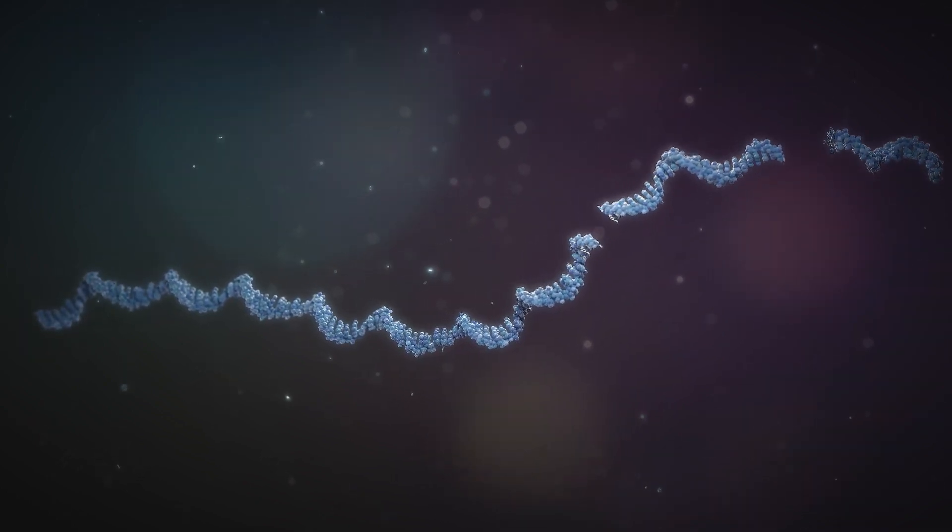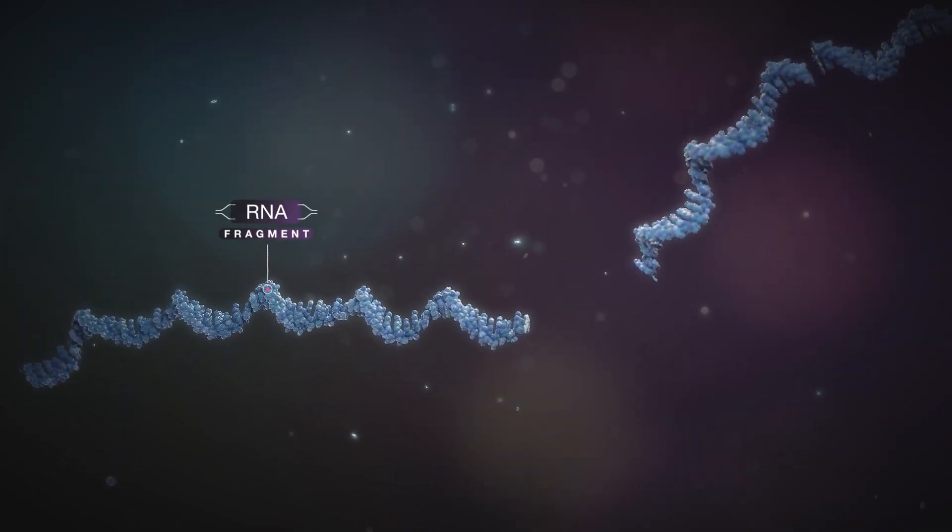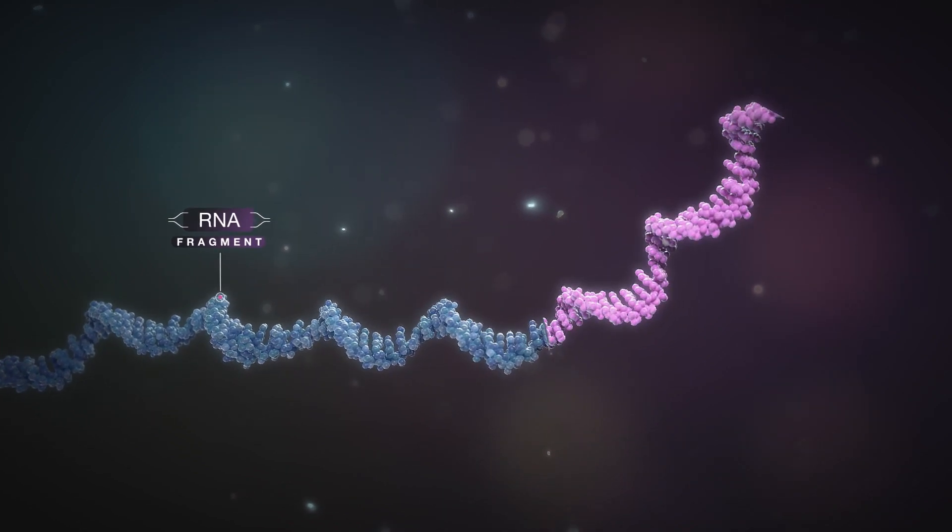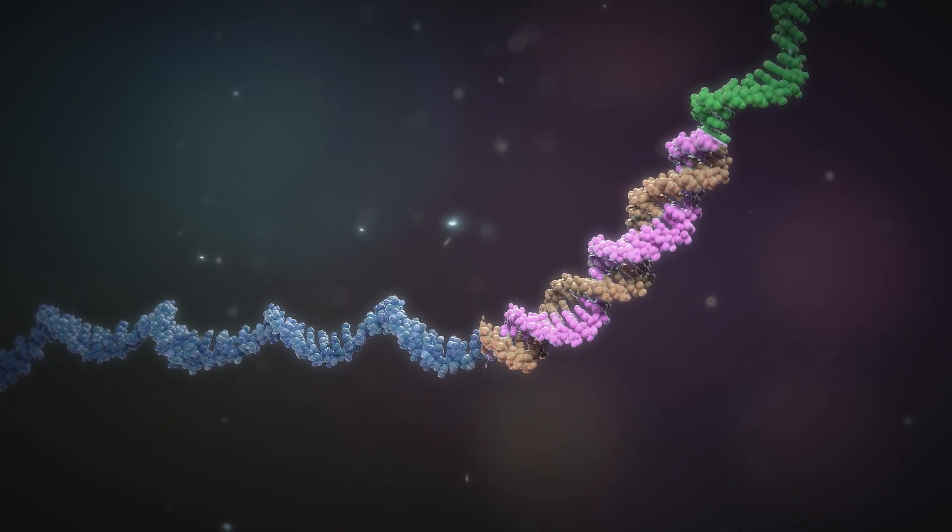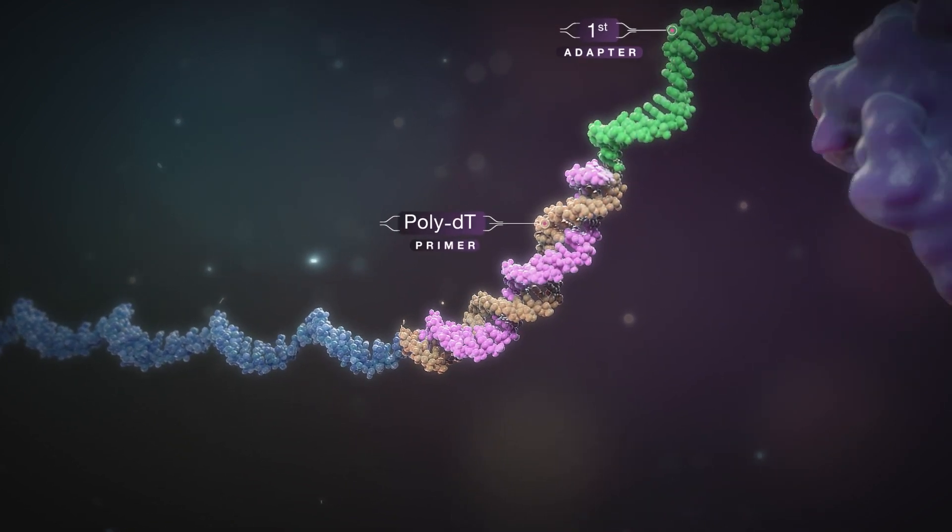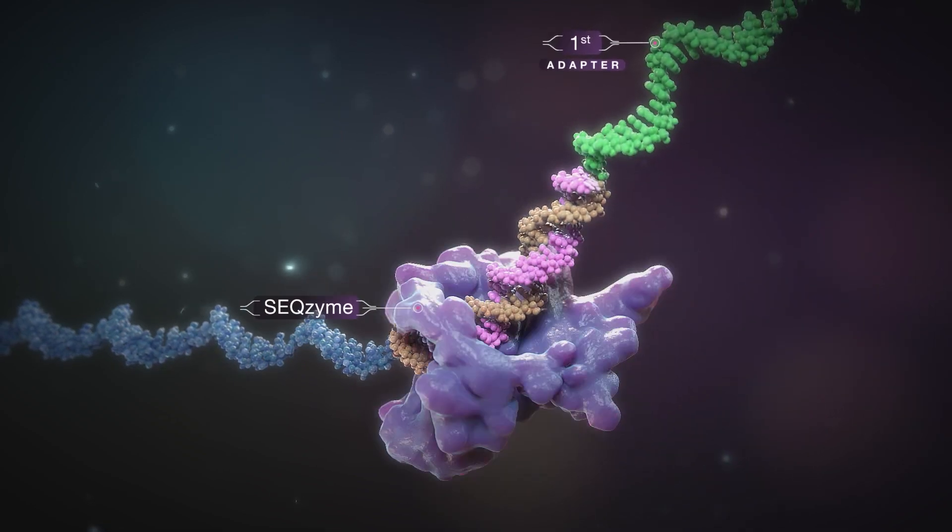Library construction begins with RNA fragmentation. RNA fragments then undergo polyadenylation. The poly-A tails anneal to poly-DT primers that also include the first adapter sequence, forming a complex recognized by SEQzyme.